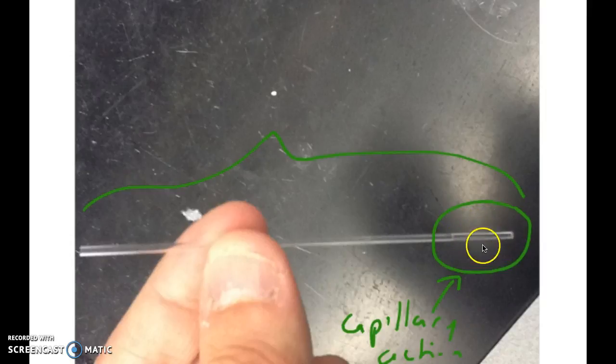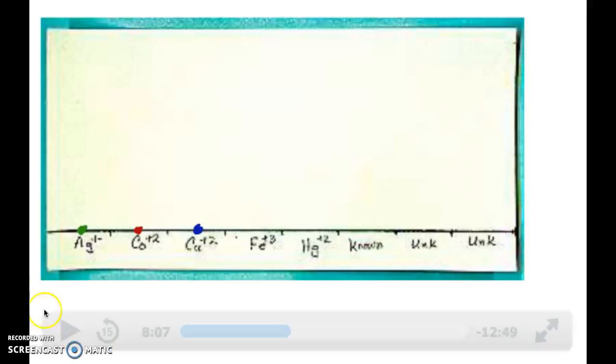That is more than enough sample to spot. You actually only need maybe like less than that, maybe half of that to spot onto your paper. What you're going to do is take that capillary tube and just hold it upright, and then put a spot on each of the ions and then the mixture sample and then your unknown sample.